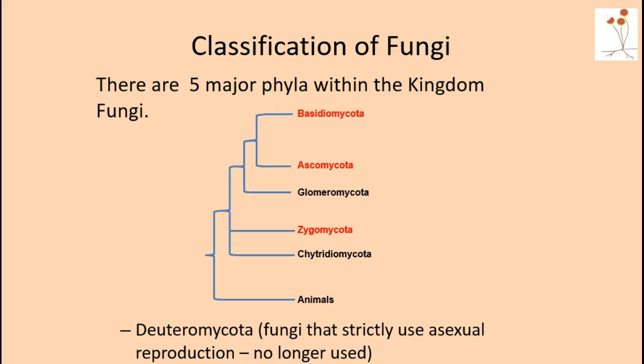The Zygomycota are just one of the five major phyla that make up the kingdom Fungi. You might already know the most common member of this phylum — it is the bread mold, also known as Rhizopus stolonifera, which will grow on the surface of bread, fruit, and vegetables.